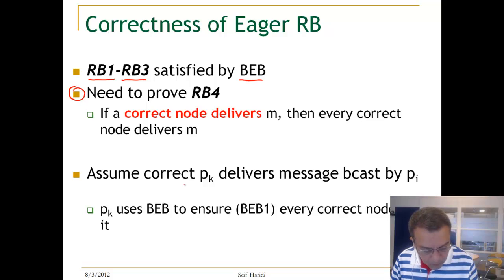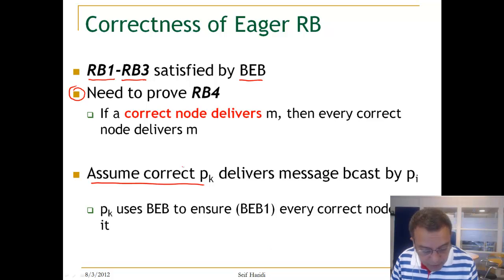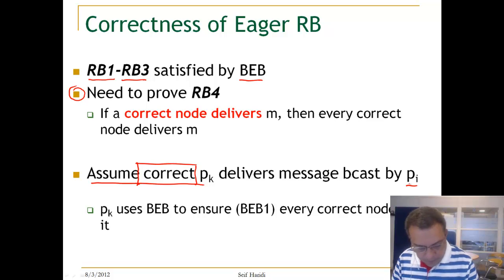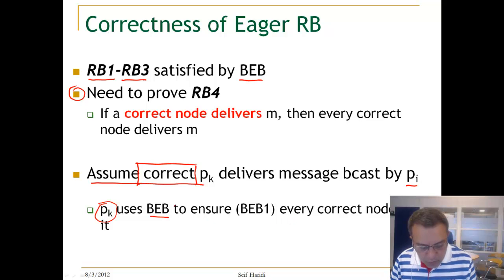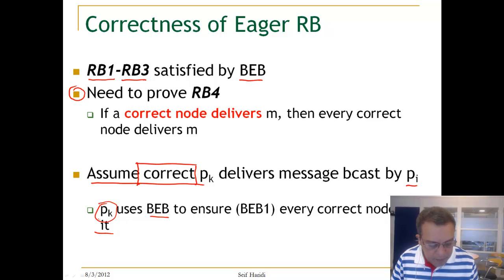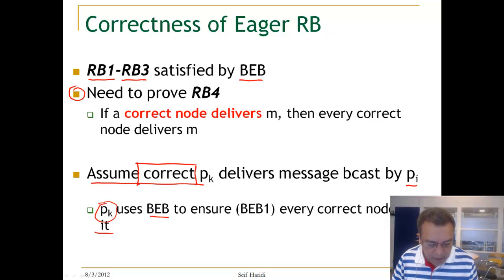We assume that process PK, which is a correct process, delivers message M broadcast by PI. Because PK delivers a message broadcast by PI, it immediately BEP broadcasts this message. PK uses BEP broadcast to ensure that every correct node gets it — basically because PK uses the validity property, and since PK is correct, every other correct process will deliver the message.